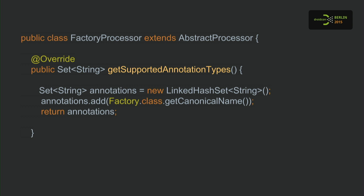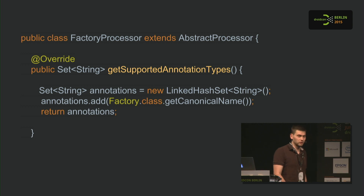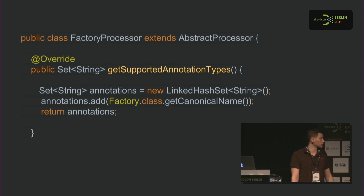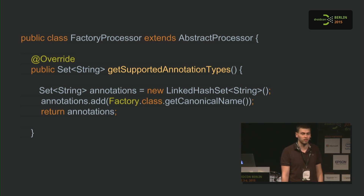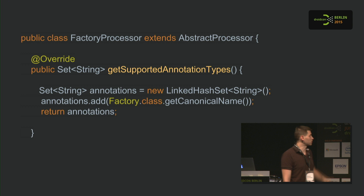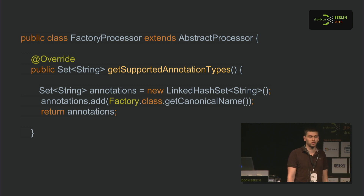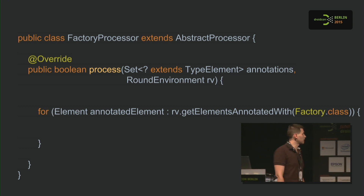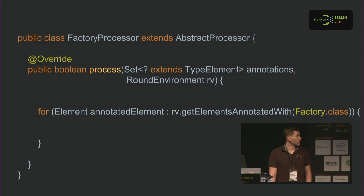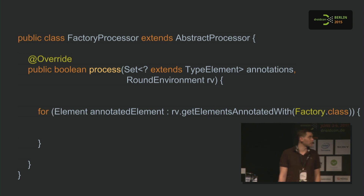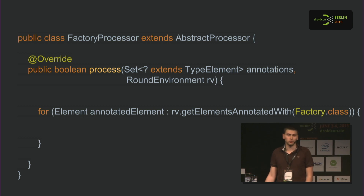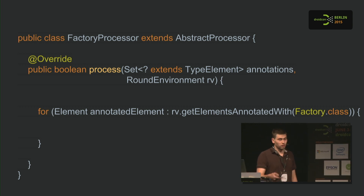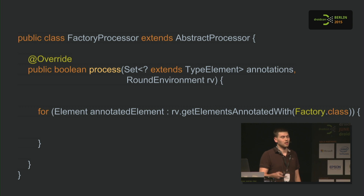The next thing is registering our annotation processor for certain annotations. We do it by overriding getSupportedAnnotationTypes and returning a set of strings with fully qualified class names. We use FactoryAnnotation.class.getCanonicalName() to register the @Factory annotation to this processor. The process method is then called to process. Basically, you call roundEnvironment.getElementsAnnotatedWith(Factory.class) and get a collection you can iterate over.